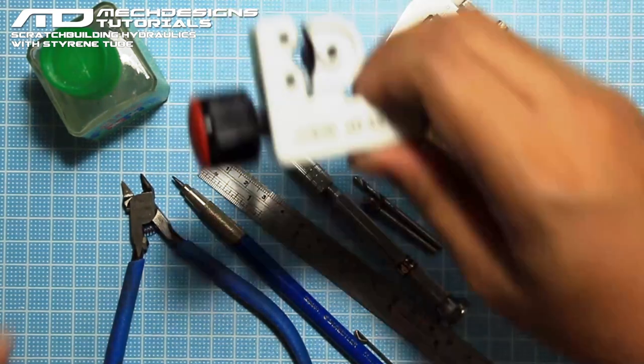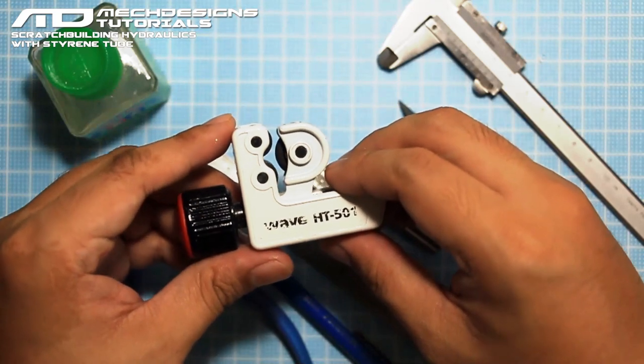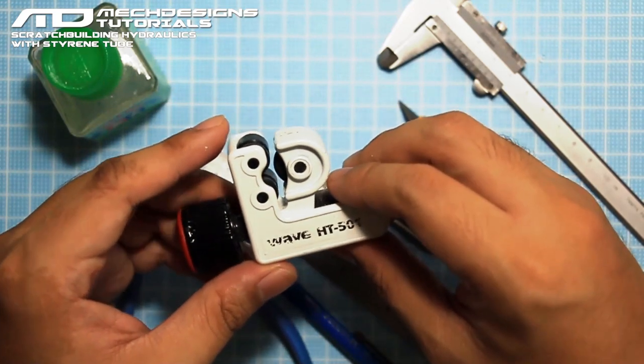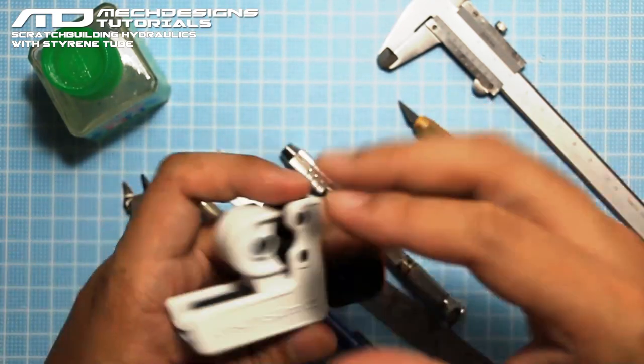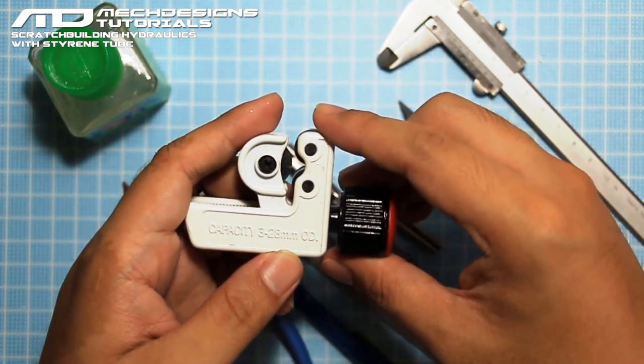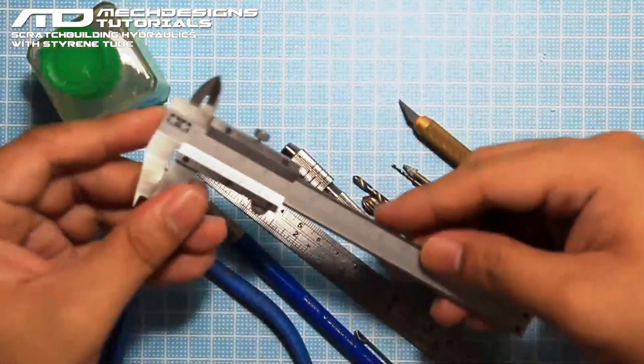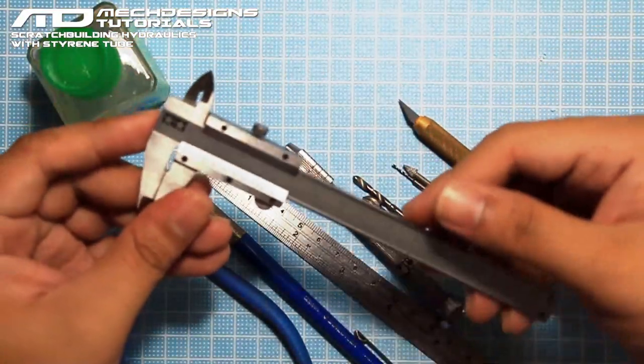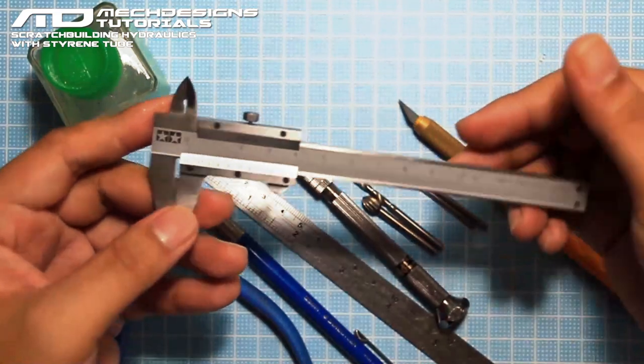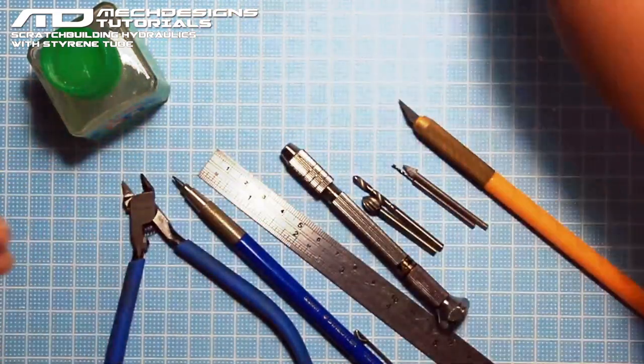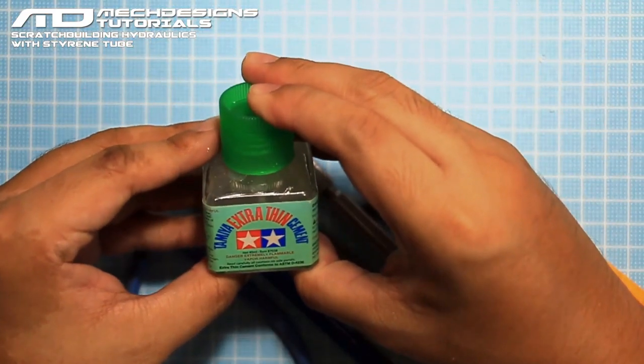First you can see that we have a pipe cutter here. This actually came from Wave, model number HD501, and it has the capacity from 3 to 28mm diameter. Next we have a caliper, and we're going to use this to measure the diameter of the styrene tubes. Then we have cement, and we're going to use this to cement the materials later on.